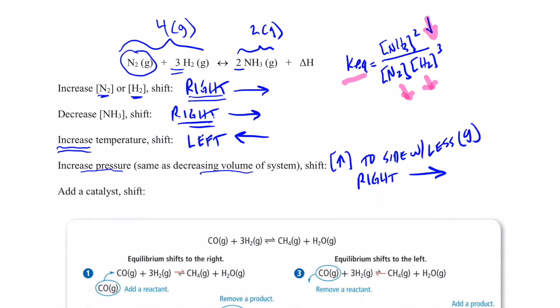And then finally, if I add a catalyst, adding a catalyst does not shift the equilibrium. It will simply help you get to the equilibrium sooner. So, it doesn't change the delta H of the reaction, and it does not shift the equilibrium.